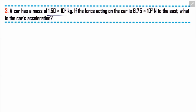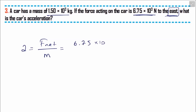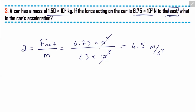In this question, a car has mass 1.5 × 10³ kilograms. If the force acting on the car is 6.75 × 10³ newton to the east, what is the car's acceleration? Acceleration equals F_net over mass: 6.75 × 10³ divided by 1.5 × 10³ — these cancel each other and the result is 4.5 meters per second squared, direction east. Thanks for listening.